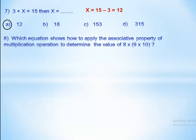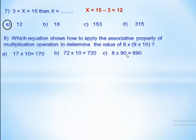Which equation shows how to apply the associative property of multiplication to find the value of 8 times (9 times 10)? We know that 17 times 10 equals 170 is incorrect. The correct approach: 8 times 9 equals 72, then 72 times 10 equals 720. So the right answer is B.